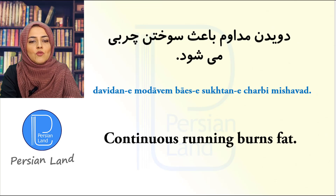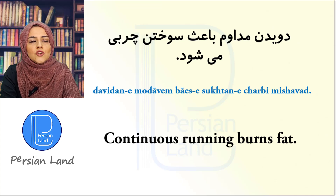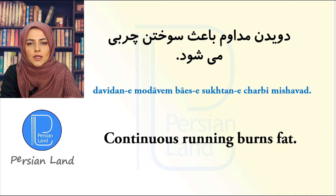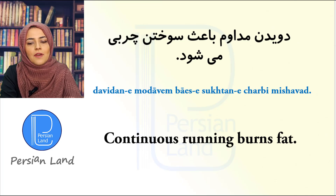دویدن مداوم باعث سوختن چربی می شود. مداوم or پیوسته — they both mean 'continuous'. سوختن چربی means 'burns fat' / 'to burn fat'. چربی is 'fat'.